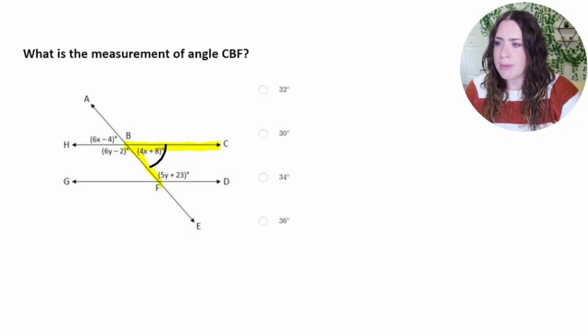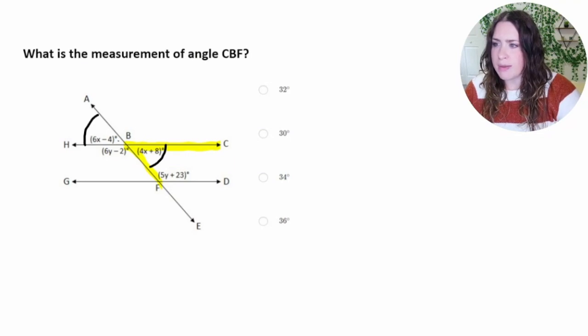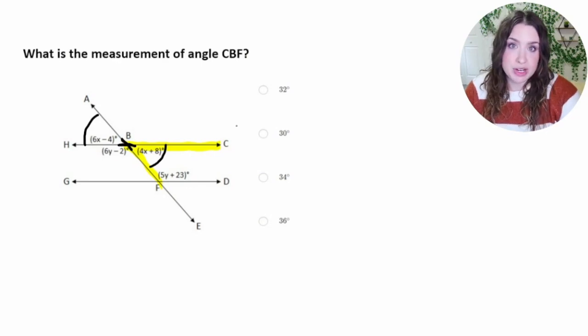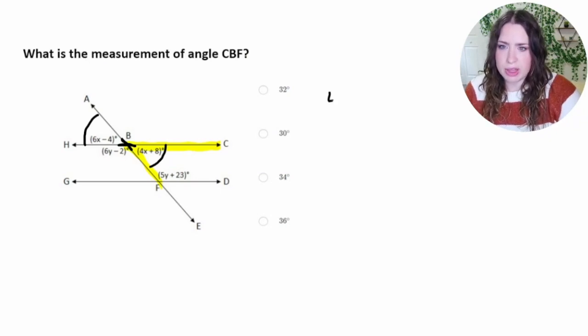So the measure here, CBF, is a vertical angle pair with angle ABH, because they're kind of like mirrored images of each other. And because they're a mirrored image, they're going to be equal. So I can set up an equation to show that relationship that 4x plus 8 is equal to 6x minus 4.